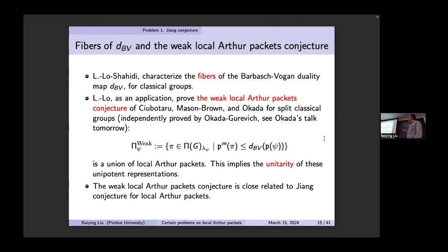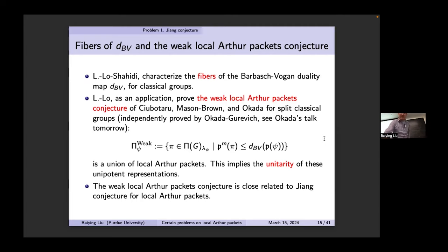The weaker local Arthur conductor conjecture says: you fix an infinitesimal character and consider representations such that the wave-front set is bounded by the candidate upper bound. The conjecture is that this forms a union of local Arthur packets. In particular, this would imply the unitarity of these unipotent representations. It turns out this weaker local Arthur conductor conjecture is closely related to Johnson's conjecture — the upper bound naturally plays a role here.